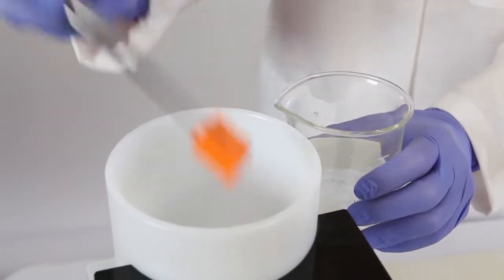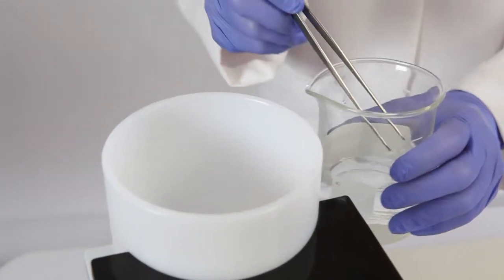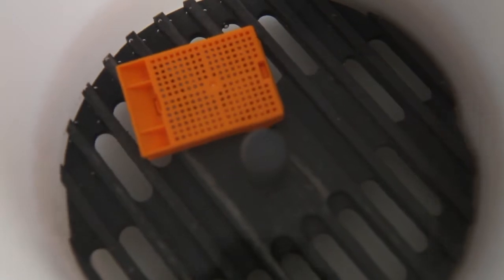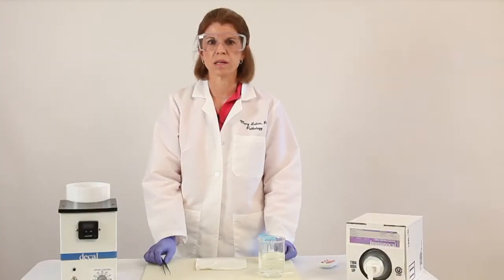So now I'm going to put the specimen into ImmunoCal. I use a magnetic stirrer with a bar that constantly spins. It keeps the solution moving, so more ions make contact with the specimen, which speeds up the process.